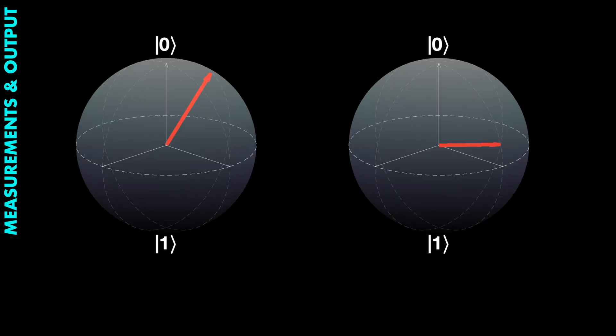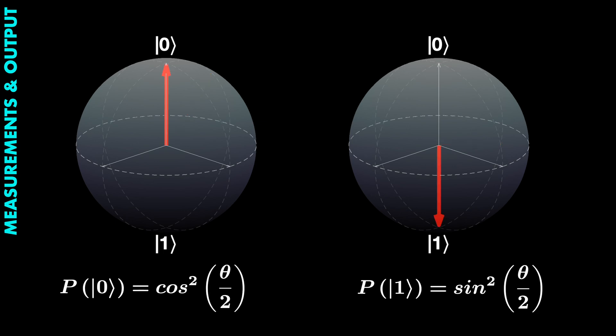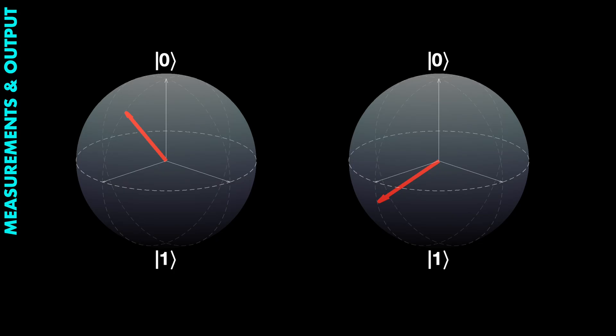On the Bloch sphere, a measurement projects any state vector to either the zero or one state, with probabilities depending on the state vector itself. Intuitively, any vector in the northern hemisphere is more likely to come up as zero, and any vector in the southern hemisphere is more likely to end up as one.